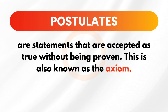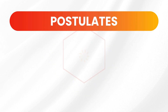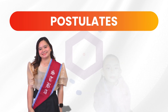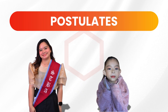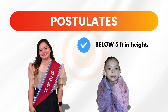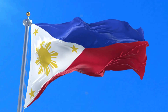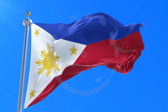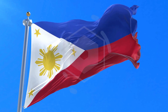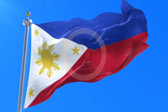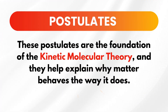Postulates are statements that we accept as true without needing proof. Think of them as the basic building blocks of a theory. For instance, if you know my sister Ms. Ella is 5 feet tall and her daughter is smaller than her, you would believe her if she said that her daughter is below 5 feet in height. You don't need proof because the logic is sound. On the other hand, a theorem is a statement that has been proven true using postulates and other theorems. An example is finding the accurate height of a flagpole — you'd need proper calculations and measurements rather than just making an educated guess. Now let's move on to the postulates of the particle theory of matter. These postulates are the foundation of the kinetic molecular theory and they help explain why matter behaves the way it does.